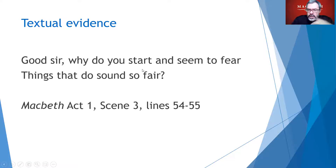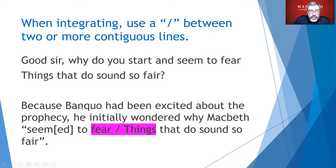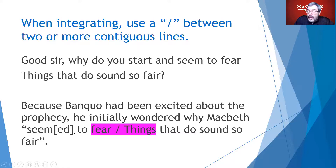Let's talk about how we would integrate the quote to show this line break — the break between 'fear' and 'things.' When integrating, use a slash between two or more contiguous lines. Here's a sentence we rewrote: 'Because Banquo had been excited about the prophecy, he initially wondered why Macbeth seemed to fear / things that do sound so fair.' The slash right in your text shows the break between lines, as long as those lines are side by side. The bracketed area demonstrates that I've changed a word to past tense so it fits grammatically. Note there's no citation yet — we're going to add that.